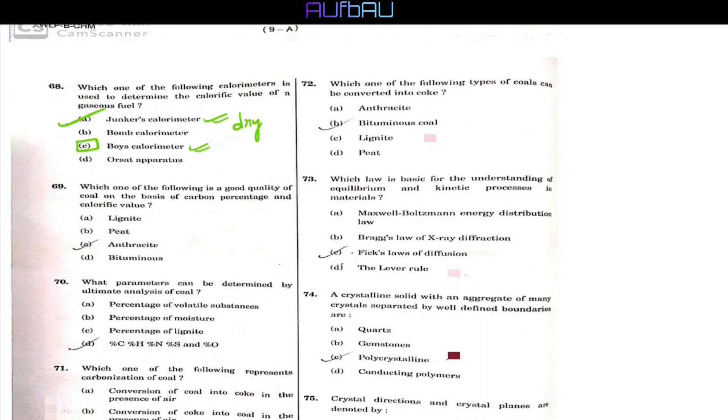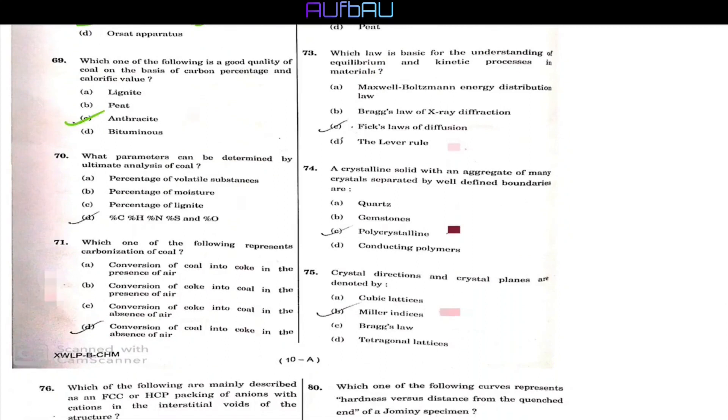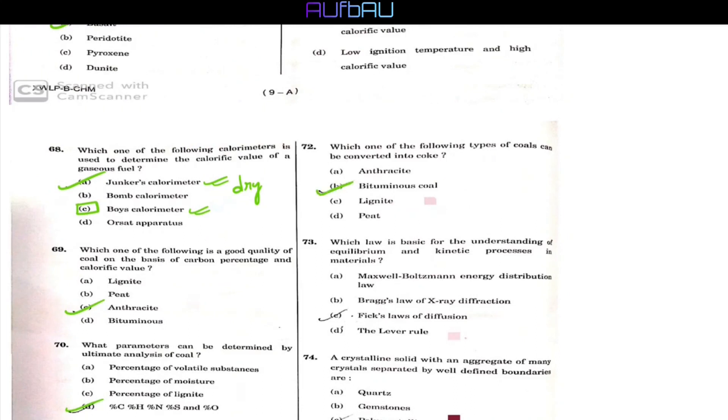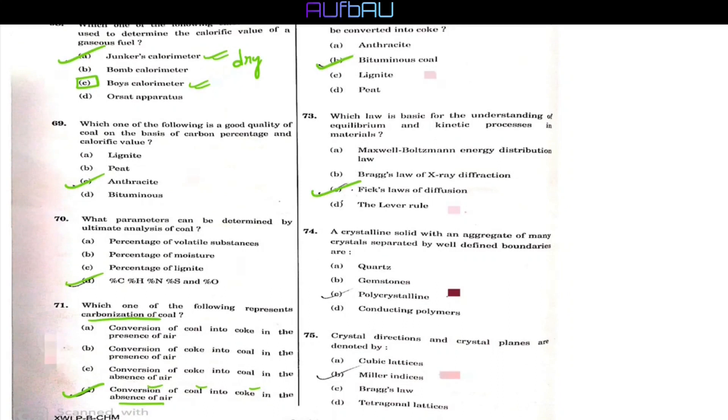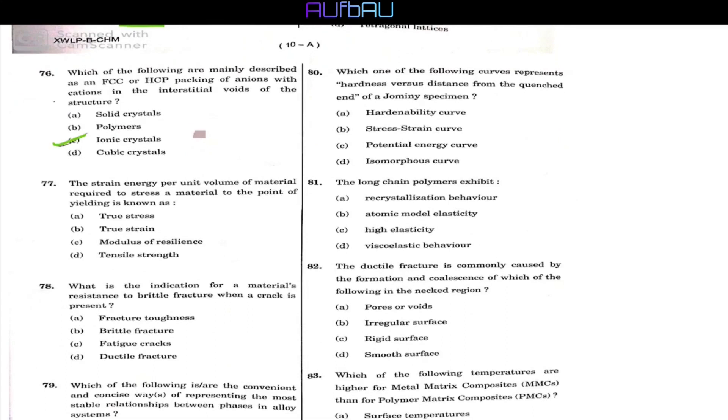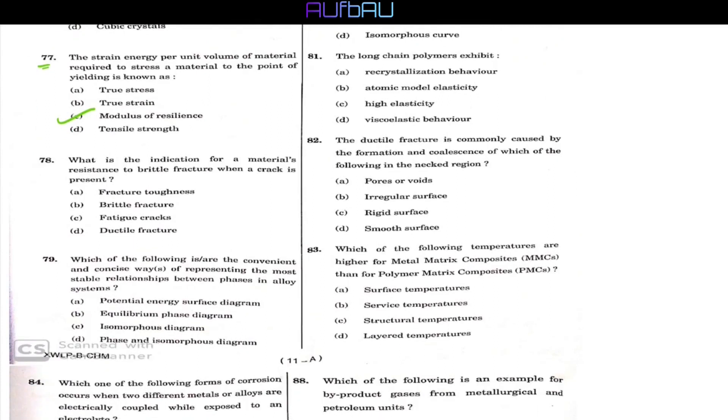Then next, the calorific value of a gaseous fuel is determined by Junker's calorimeter. By the way, in this case, Boys calorimeter is also a correct option because in the internet, I have found both these are used for gaseous fuels. Now, which is for dry gas exactly and which is for fuel gas, I am not sure about. So, option will be either option A or option C. Question number 69, the answer should be option C, anthracite. Then for ultimate analysis of coal, option D is the correct option. Then carbonization of coke is represented by conversion of coal into coke in the absence of air. So, option D. Next is 72. Only bituminous can be converted into coke. Correct option of 73 should be option C. 74 should have correct option C, polycrystalline. Next is from solid state. B should be the correct answer.